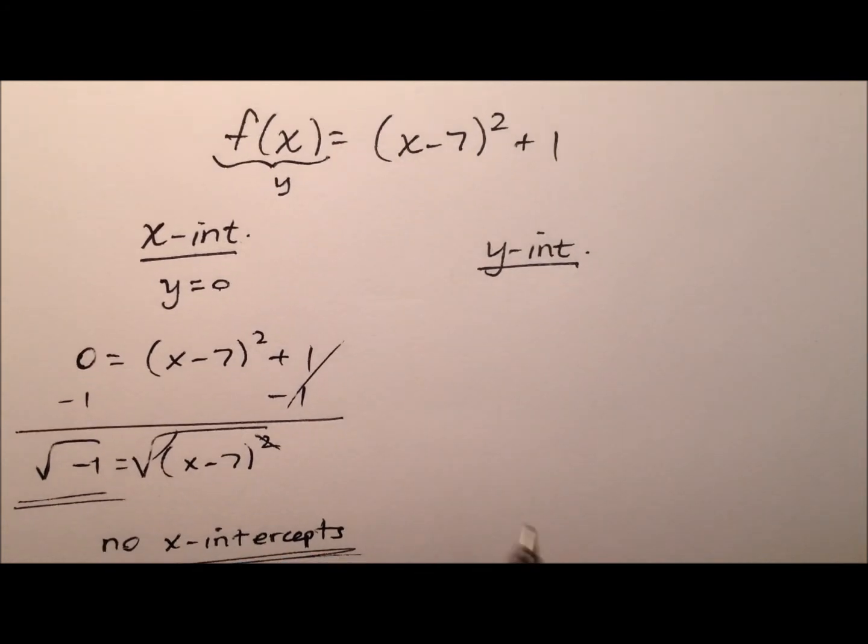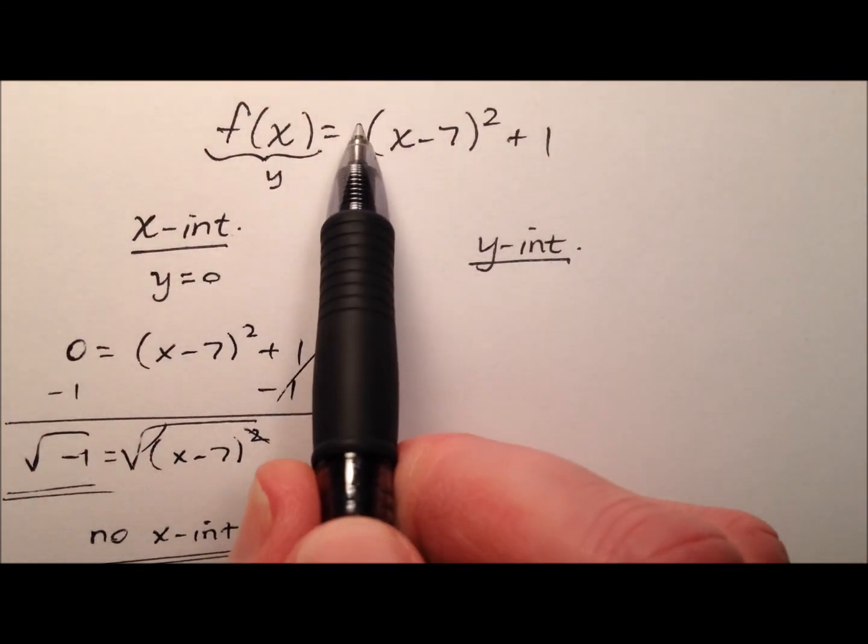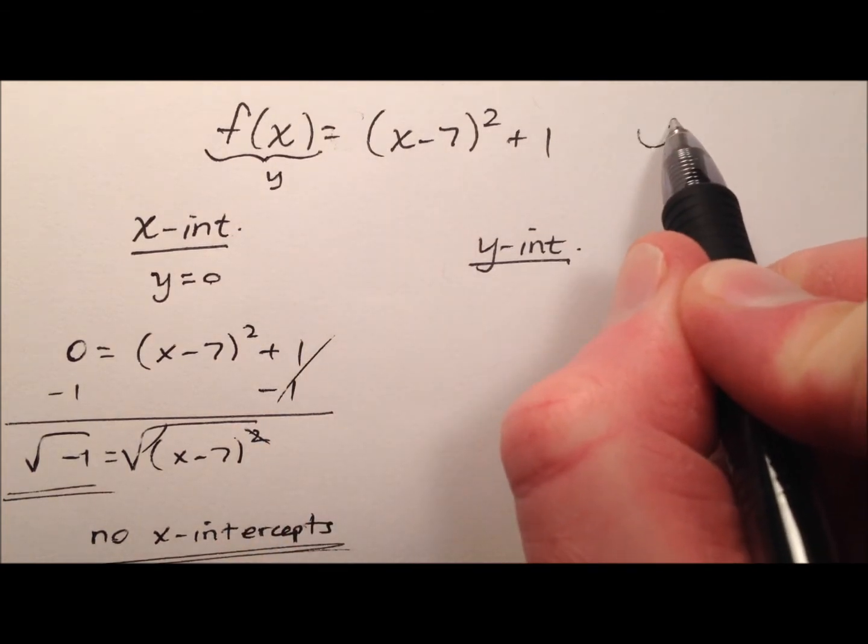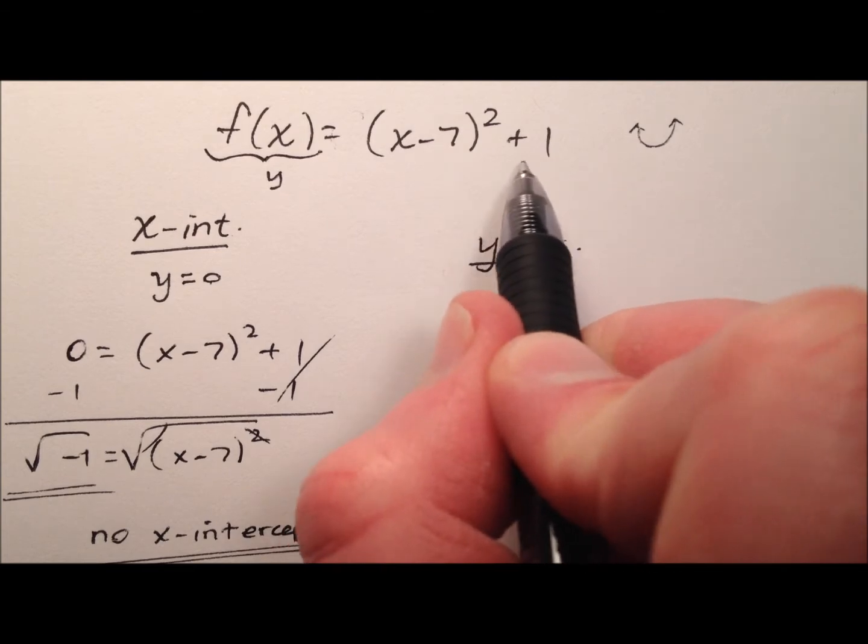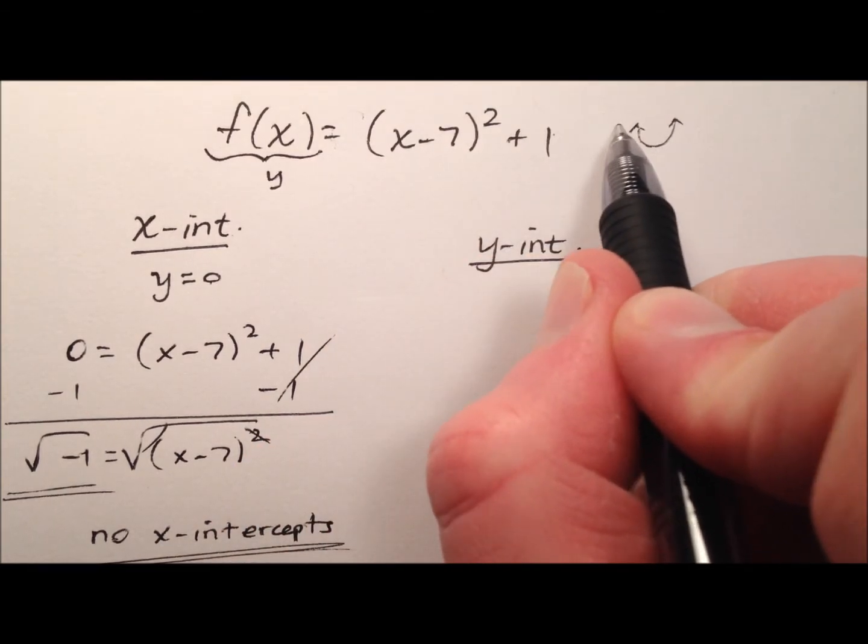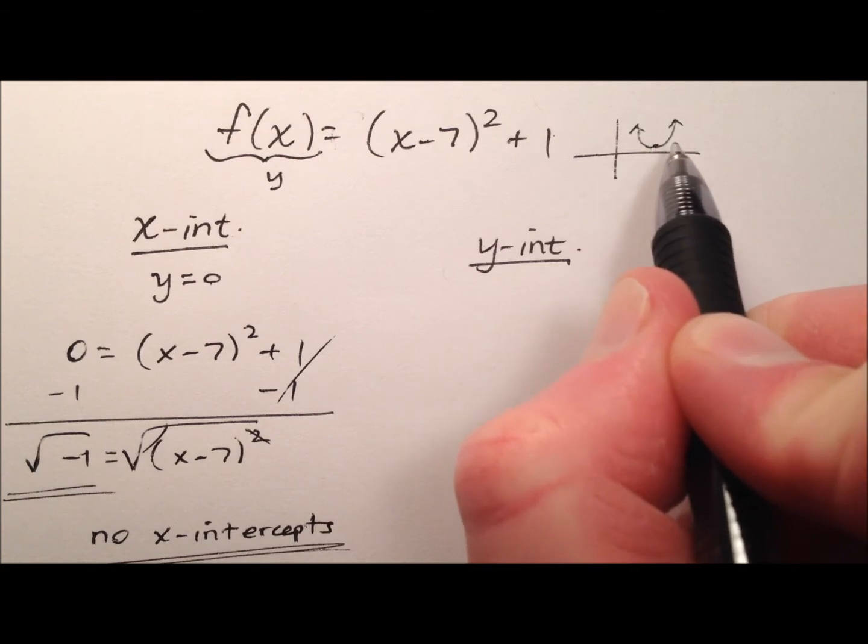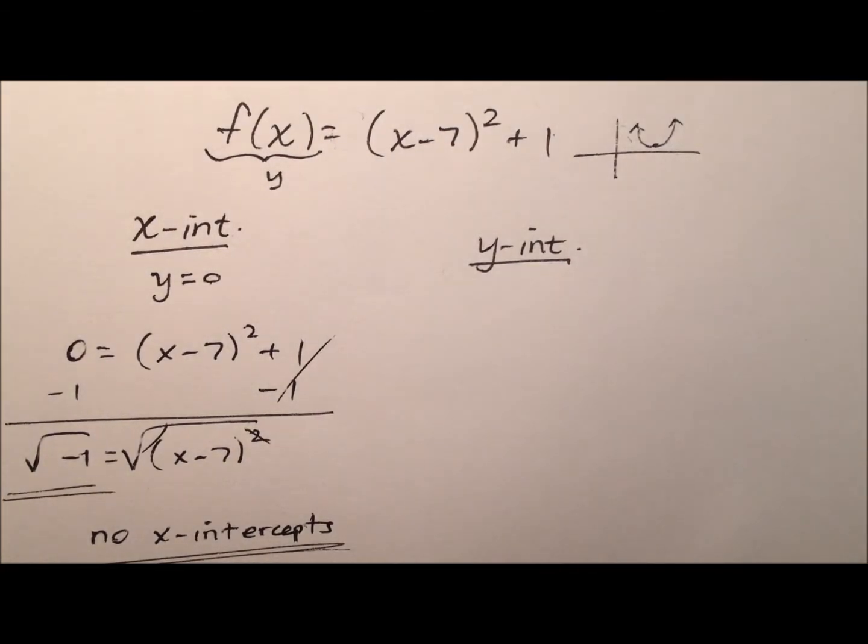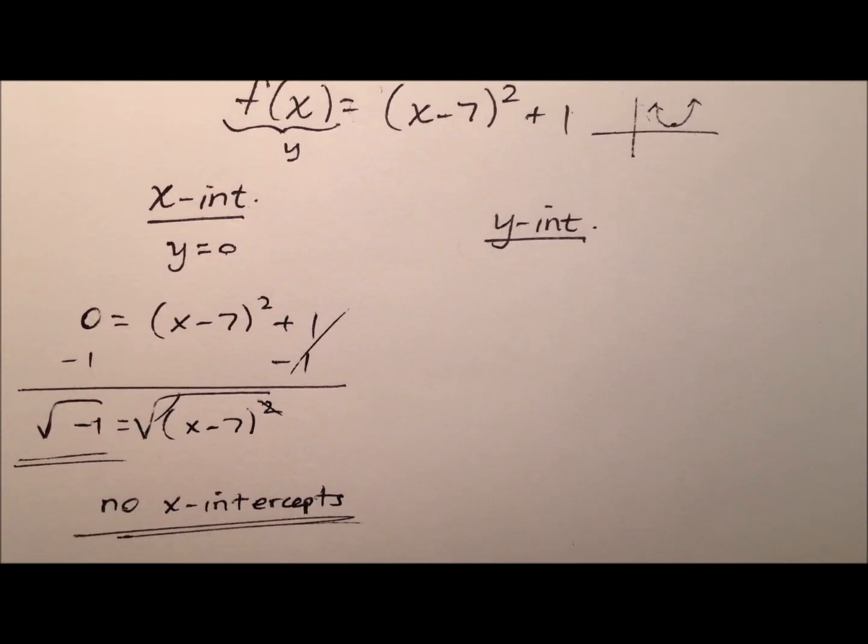Well, let's take a look at the function and maybe think about why. We know that it's positive out front here, so we know our parabola is opening upward, and we also know that we have a shift 7 units to the right and 1 up. So, 7 units to the right and 1 up, yeah, so this guy is never going to touch or cross that x-axis. So, indeed, no x-intercepts.